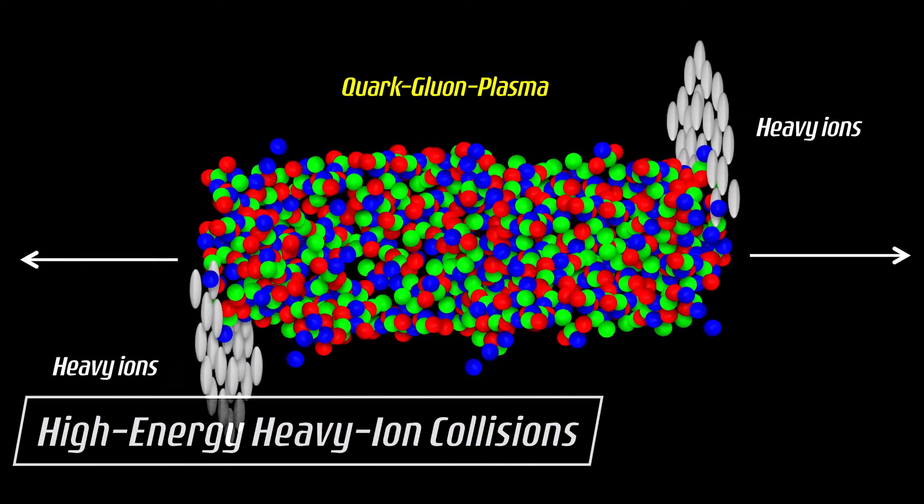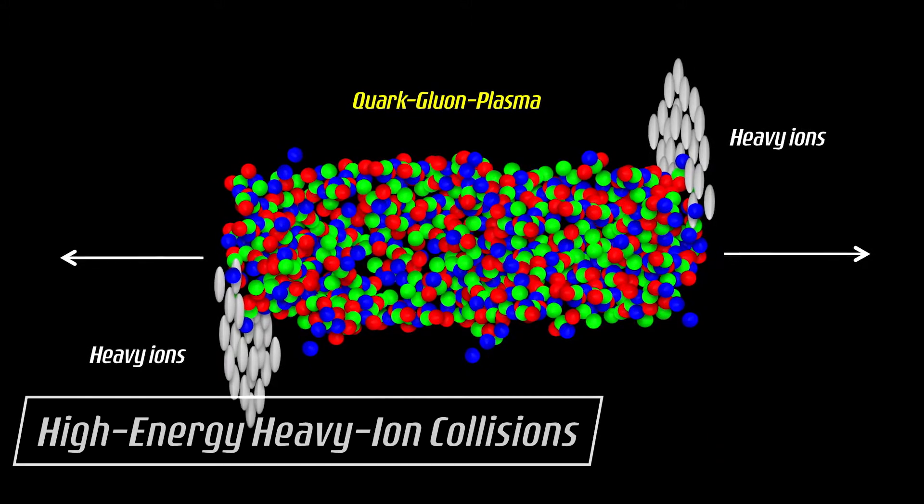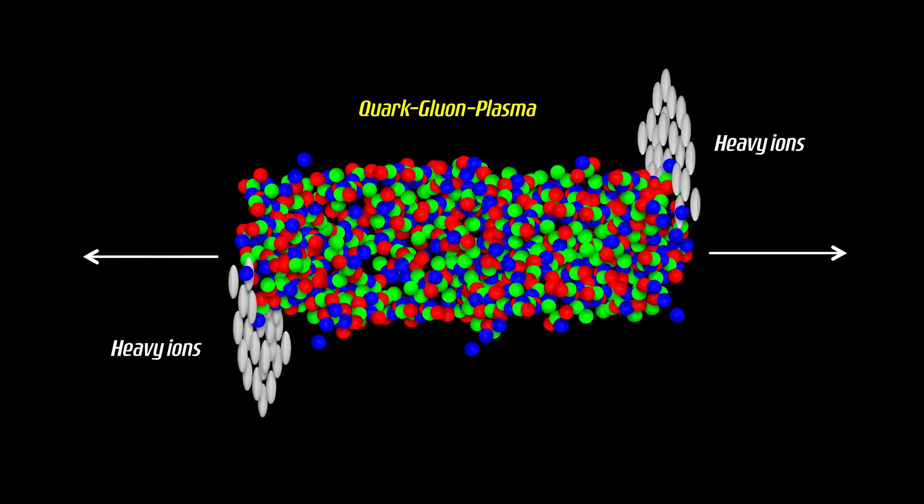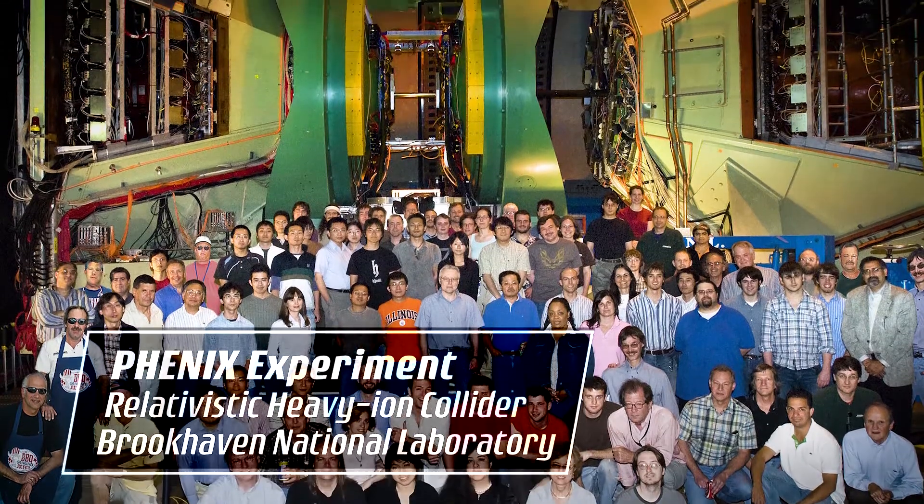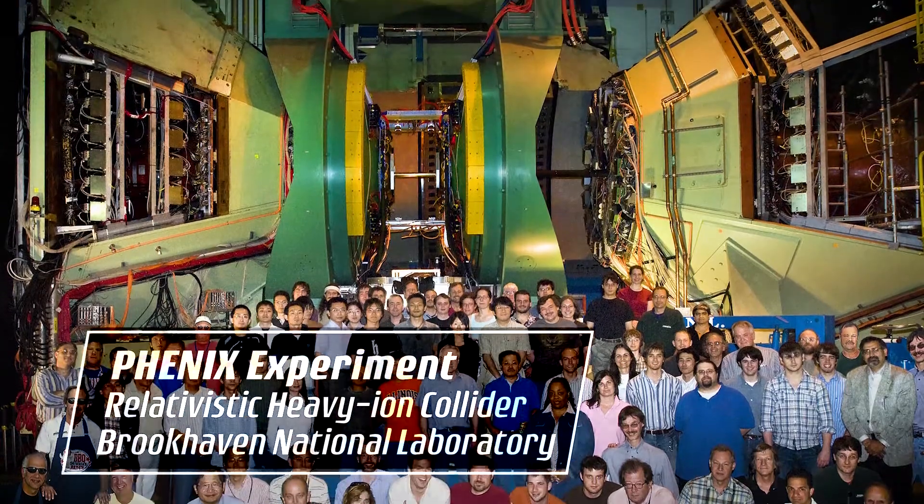So high-energy heavy ion collisions are only the experimental ways to create a quark-gluon plasma. Our CNS participates in two big international collaborations, the Phoenix experiment at the relativistic heavy ion collider.